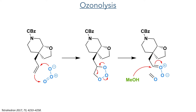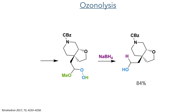A 3+2 cycloaddition of ozone with the double bond produces a molozonide intermediate. This ozonide undergoes a cycloreversion to produce formaldehyde and a carbonyl oxide. This is attacked by methanol, which was used as a solvent in the reaction, and forms a hydroperoxyacetal. This was reduced in situ with sodium borohydride to produce the target primary alcohol in 84% yield.